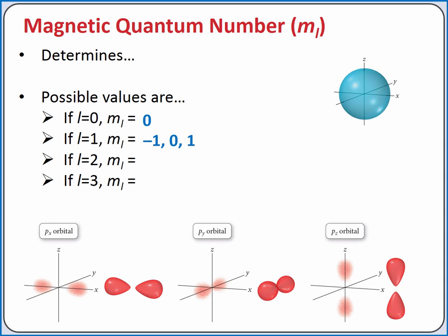When L equals 2, there are five possible orientations for the D shape, corresponding to the numbers negative 2 through positive 2. And when L equals 3, there are seven possible orientations for the F shape.